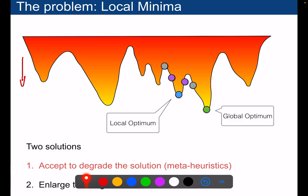And so you have two possibilities in that case. One possibility is you need to accept to degrade the current solution. For instance, you might accept to degrade it a little bit in order to be able to go down according to this path and finally be able to reach, eventually be able to reach this solution.